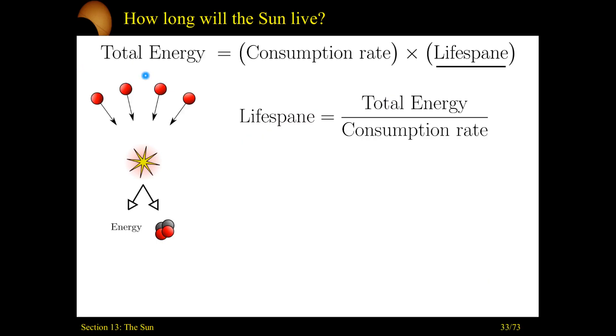So, we know how much energy the sun has. It's just the amount of hydrogen in its core that can be fused. We know the rate that the sun is consuming, how much it's spitting out energy. So, we're left with how long is the sun going to live? What's its lifespan? Just rearrange the equation. It will be the total energy divided by the consumption rate.